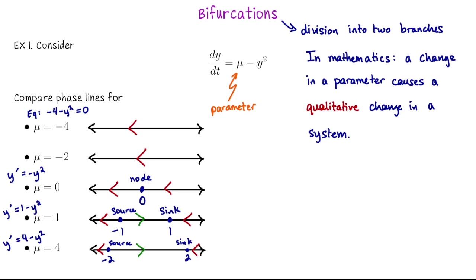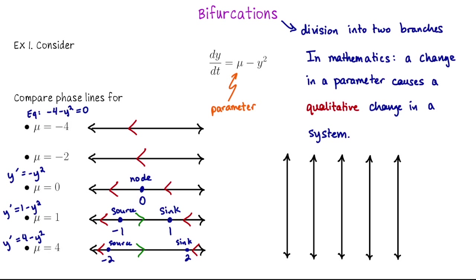This demonstration gives us a picture of how changing our parameter mu led to a change in the system from no equilibrium solutions to exactly one, to a source and a sink. We like to organize this information in what's called a bifurcation diagram. What we're going to do is take these horizontal phase lines and flip them vertically, because we're going to think of mu as an independent quantity we're shifting. We'll put mu on the horizontal axis and organize the y and dy/dt information vertically. Let me create five vertical lines.